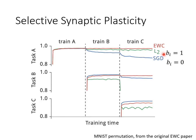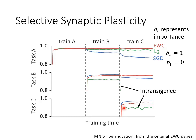However, always setting bi to 1 creates the intransigence problem. The green line shows that when learning Task B, its accuracy doesn't rise high enough — the model can't learn Task B. It's even worse for Task C: the accuracy of Task C is not higher than other methods. Setting all bi to 1 is too restrictive for the model to learn new tasks.